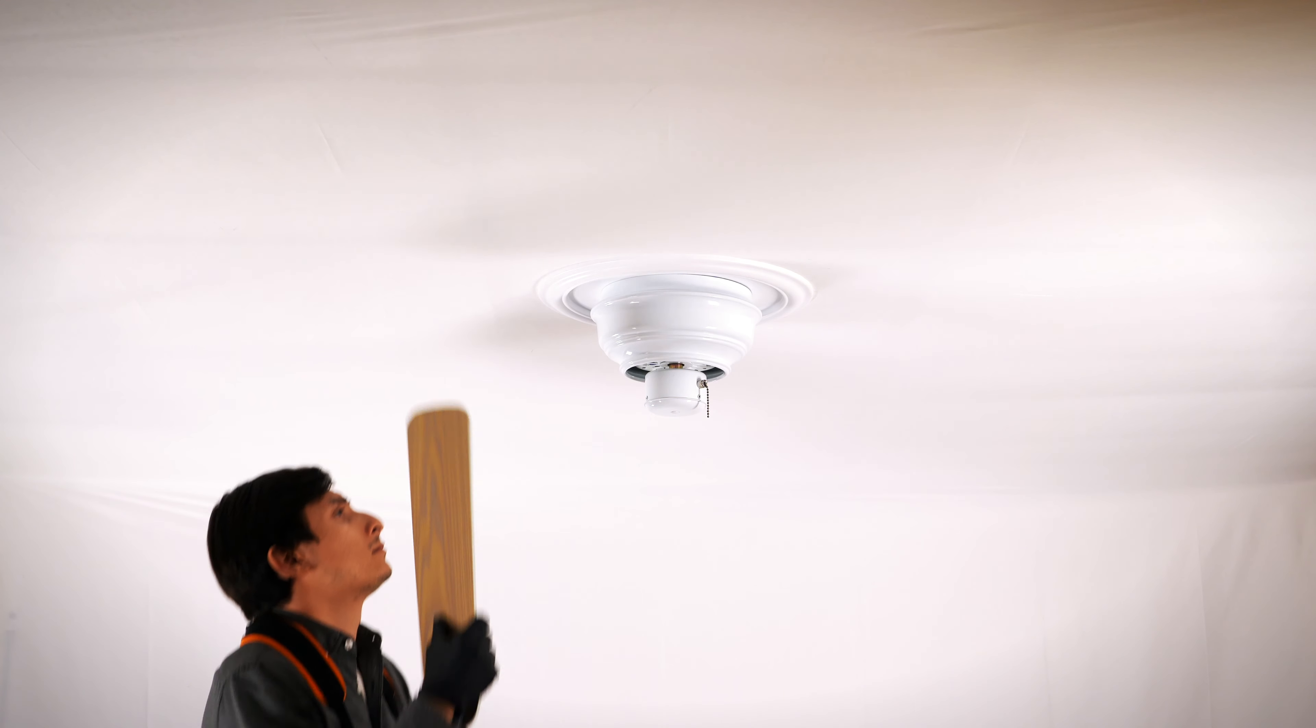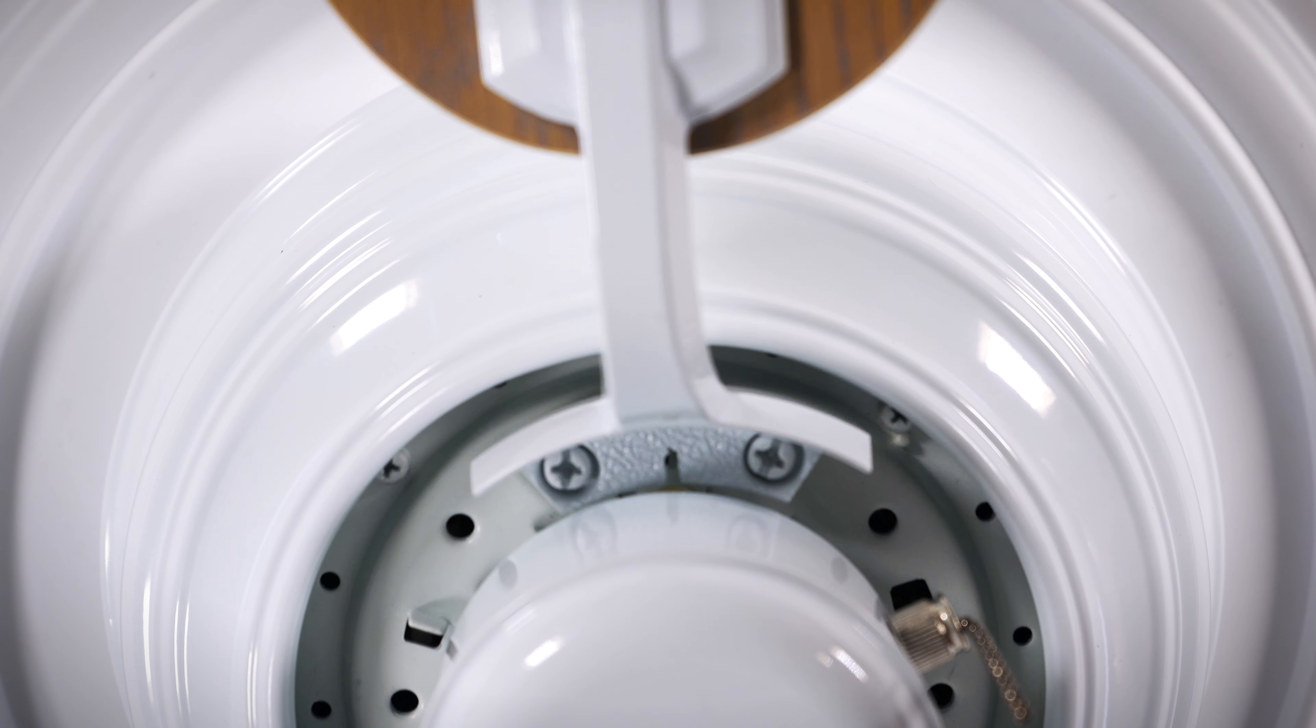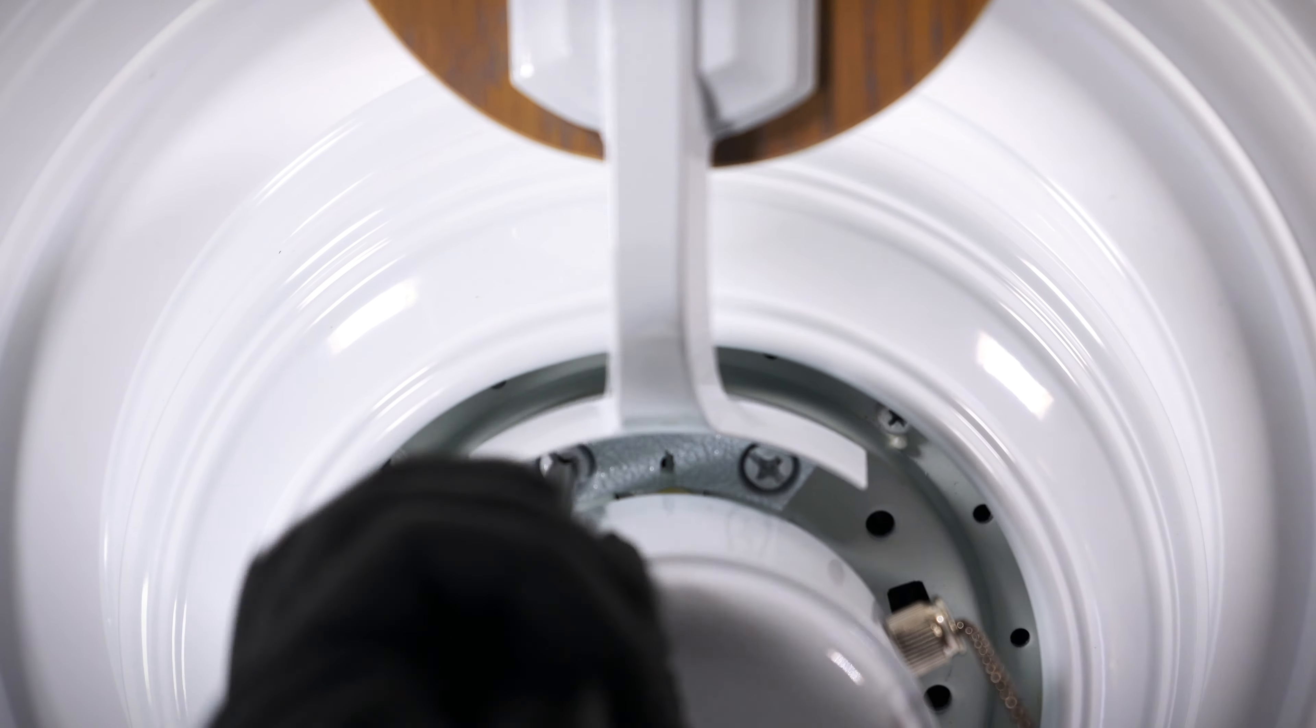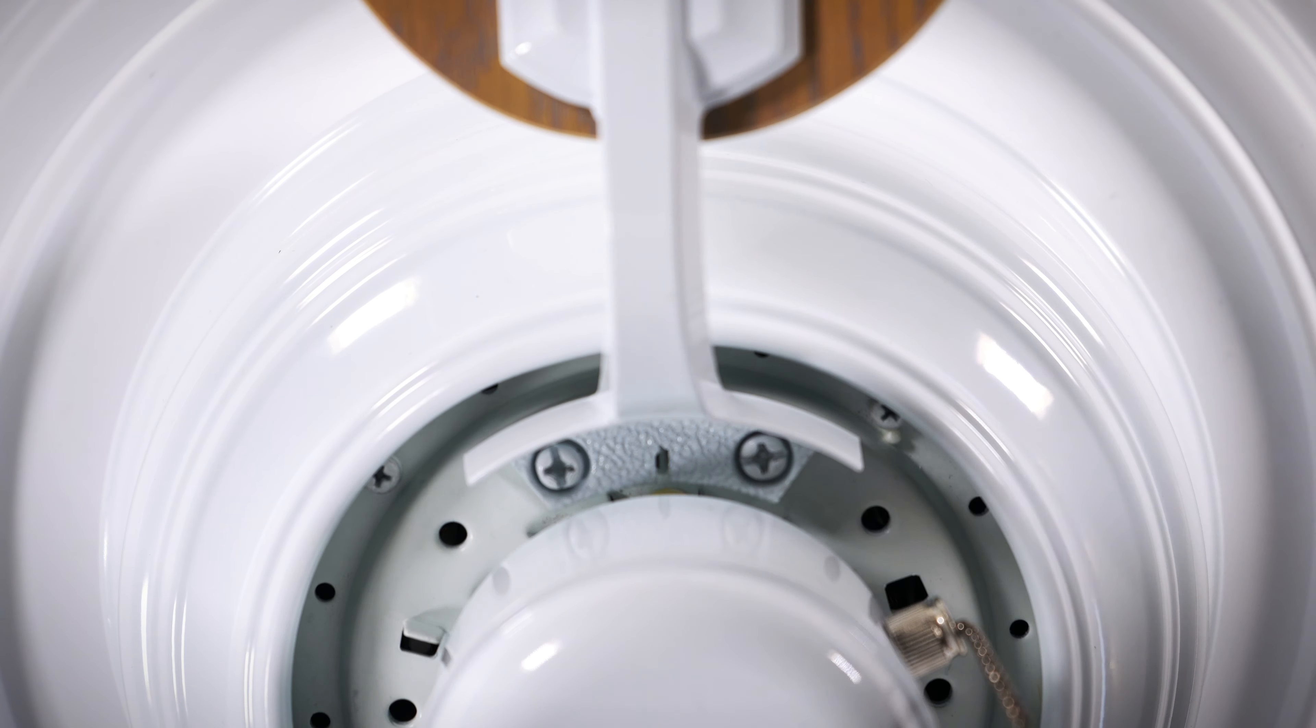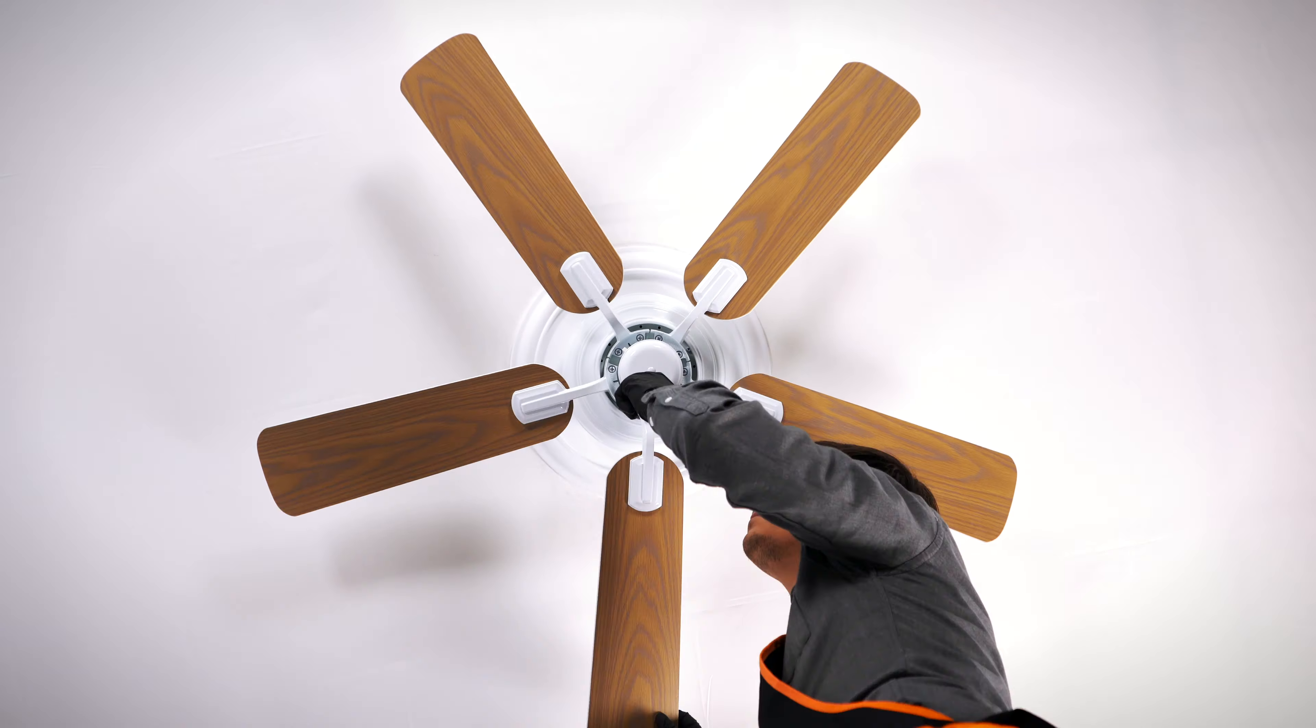Bring a blade assembly up to the motor and align it with the holes. Tighten the two blade arm attachment screws. Repeat the process for the remaining blade assemblies.